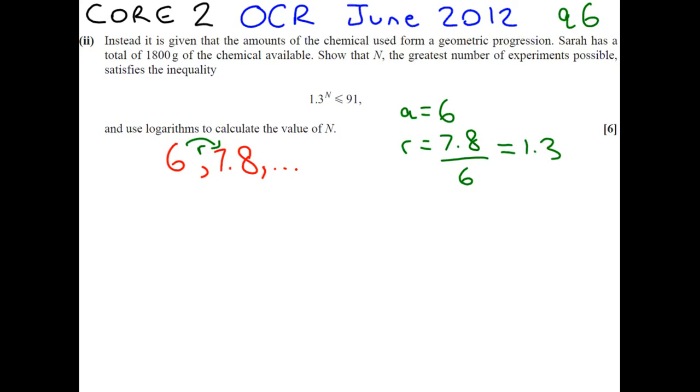And n we're not sure about, because if you read the question, it says, how many experiments are we going to do if we've got only 1,800 grams of chemical to use? So we're going to use a formula to add up all the terms. But the difference is, we are not going to know what the value is of how many terms we're adding up. That will be our unknown.